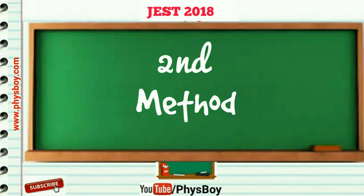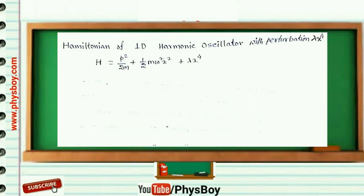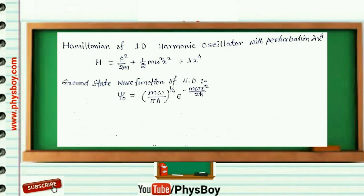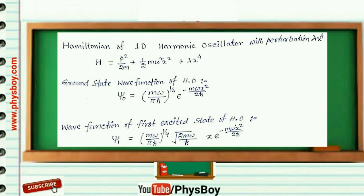Now I am going to discuss the second method. The Hamiltonian is the one-dimensional harmonic oscillator with perturbation lambda x to the power 4. The ground state wave function is psi-0 equal to (m-omega over pi h-bar)^(1/4) times e to the power minus m-omega x-squared over 2h-bar. The wave function of the first excited state is psi-1 equal to (m-omega over pi h-bar)^(1/4) times square root of (2m-omega over h-bar) times x times e to the power minus m-omega x-squared over 2h-bar.